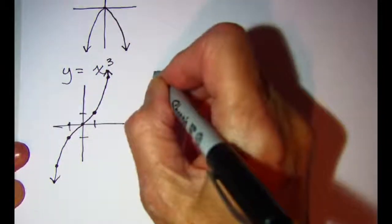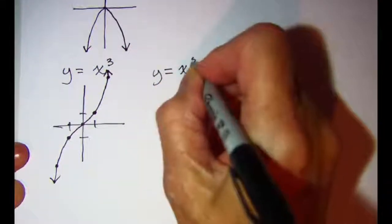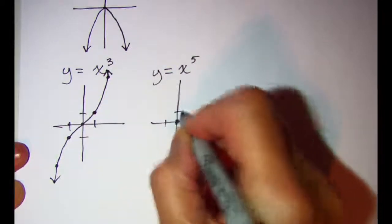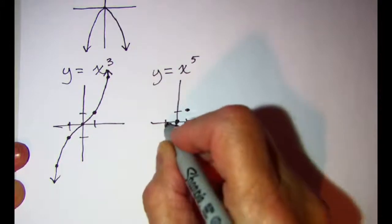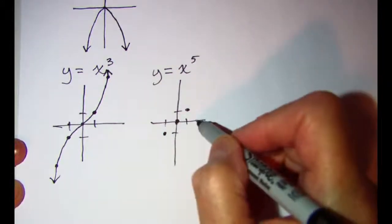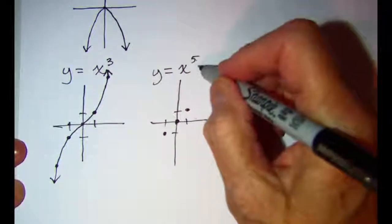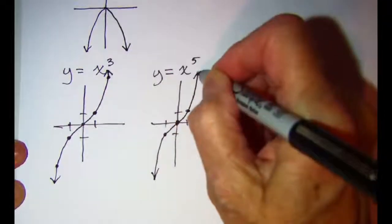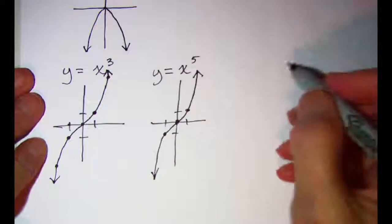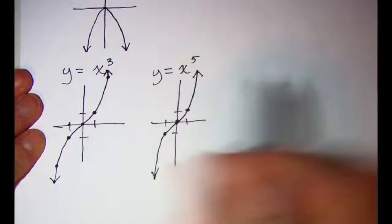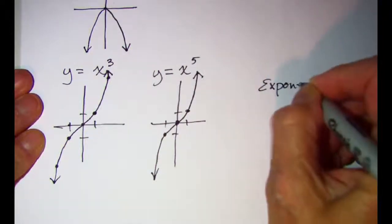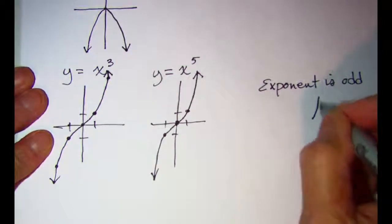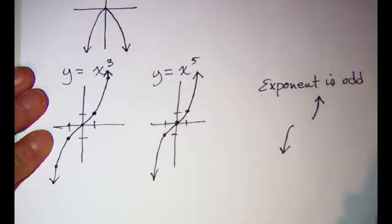Continuing on, y equals x to the fifth power: right around x equals 0, y is 0; when x is 1, y is 1; when x is negative 1, y is negative 1. But when x is 2, 2 to the fifth power is way up there. It still gives a basic graph that looks like this. So our concept here — when we have an odd exponent — our end behavior is right arm up and left arm down.